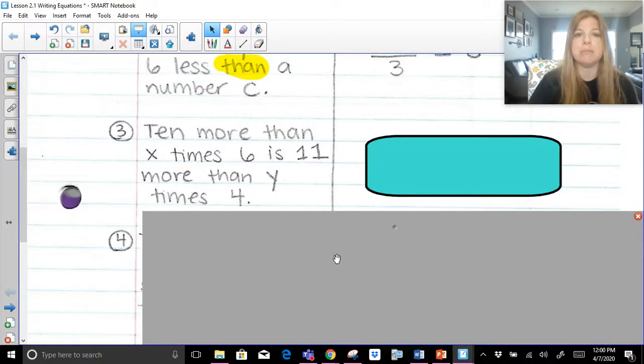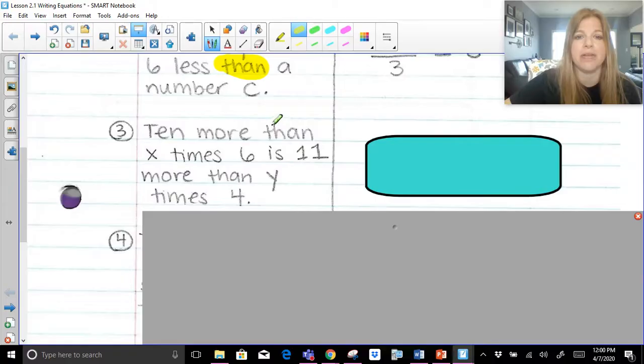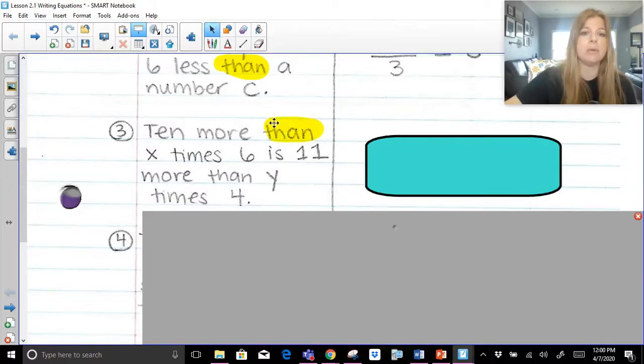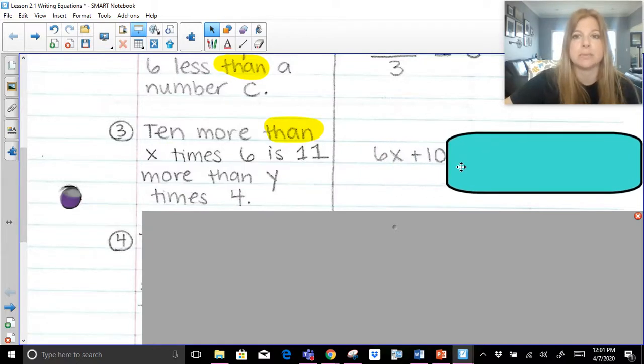10 more than x times 6 is 11 more than y times 4. All right, 10 more than, I'm going to highlight that word than again. So 10 more than x times 6. First of all, x times 6 would be 6x. And if I'm doing 10 more than 6x, this should look like 6x plus 10.